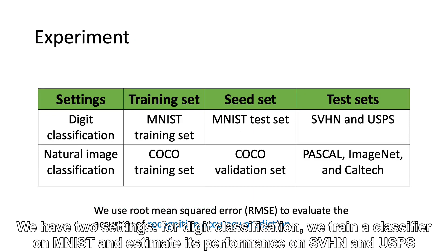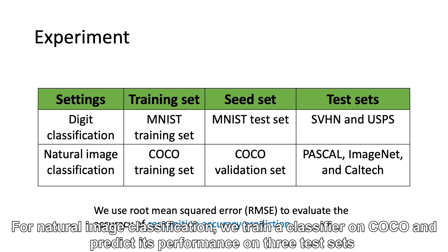We have two settings. For digit classification, we train a classifier on MNIST and estimate its performance on SVHN and USPS. For natural image classification, we train a classifier on COCO and predict its performance on three test sets.